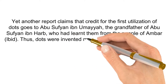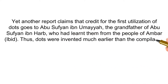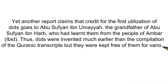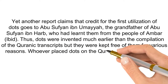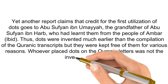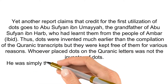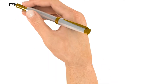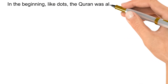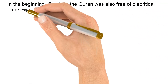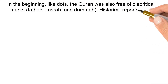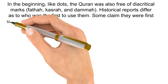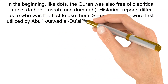Thus, dots were invented much earlier than the compilation of the Quranic transcripts, but they were kept free of them for various reasons. Whoever placed dots on the Quranic letters was not the inventor of dots — he was simply the first person to use them in the Quranic script. In the beginning, like dots, the Quran was also free of diacritical marks: Fathah, Kasrah and Dhamma. Historical reports differ as to who was the first to use them. Some claim they were first utilised by Abu al-Aswad al-Duali.